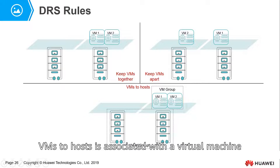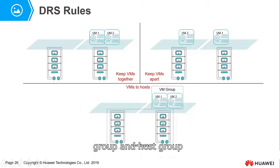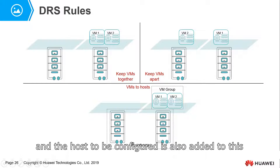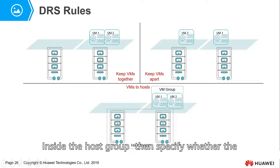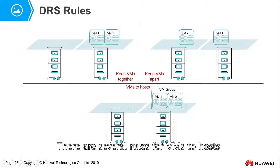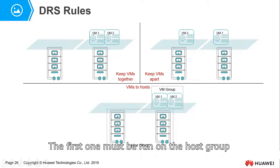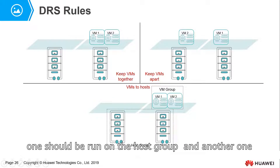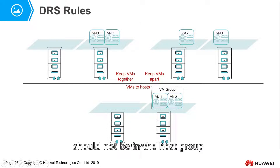The last DRS rule is VMs to host, which associates a virtual machine group with a host group and sets association rules. Virtual machines to be configured are added to a virtual machine group, and the target hosts are added to a host group. You then specify whether members of the virtual machine group can or cannot run on members of a particular host group. The roles for VMs to host include: must run on the host group, forbidden to run on the host group, should run on the host group, and should not run on the host group.